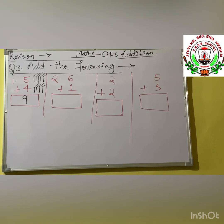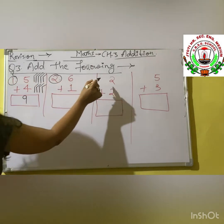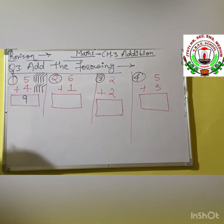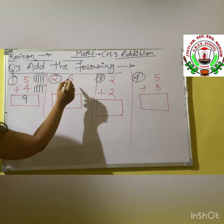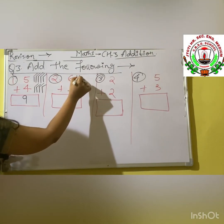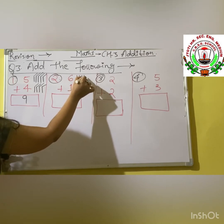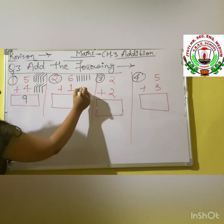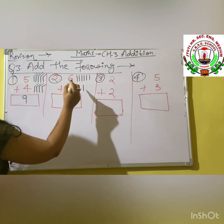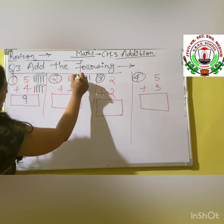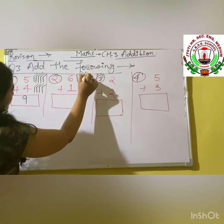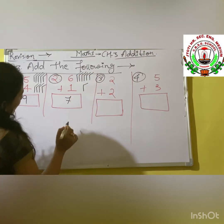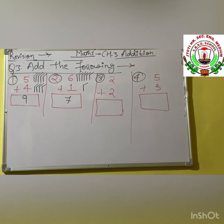Next question is 6 plus 1. So first we draw 6 lines: 1, 2, 3, 4, 5, 6. Then plus 1 — we draw 1 stroke. Now we count: 1, 2, 3, 4, 5, 6 and 7. Our answer is 7.